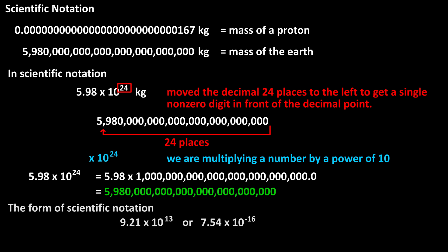So the form of scientific notation is a single non-zero number, so 1 through 9 in the ones column, then times 10 raised to a positive or negative power. And very large numbers will have a positive power of 10, and very small numbers will have a negative power of 10.